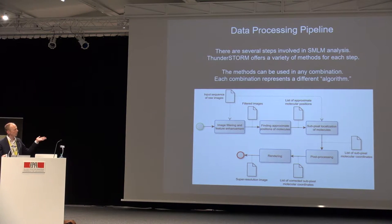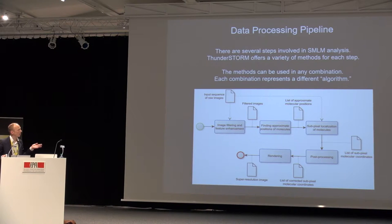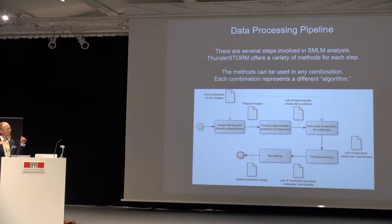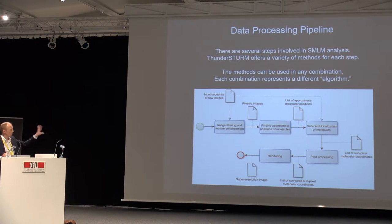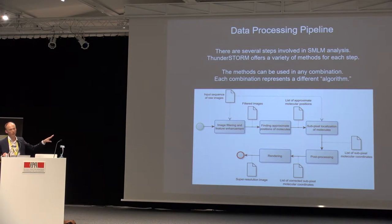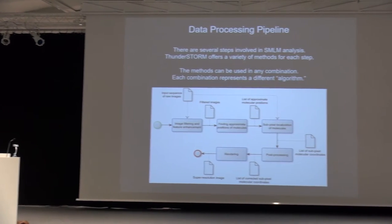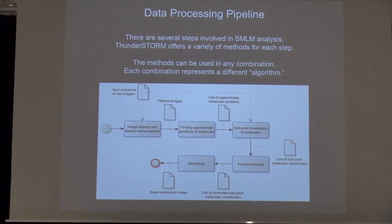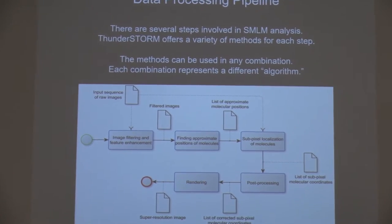As we know, there are several steps involved in analyzing single molecule data. ThunderStorm offers a variety of methods for each of these steps, and the methods can be used in any combination. Each of these different combinations represents a different algorithm. Some of the steps are shown in this flowchart: we start with image filtering and feature enhancement, then finding the approximate positions of molecules, which we call detection, then sub-pixel localization and post-processing like drift correction, and finally rendering.